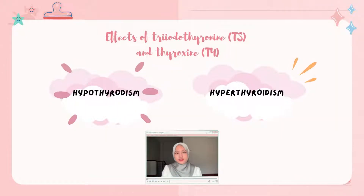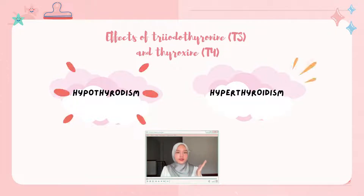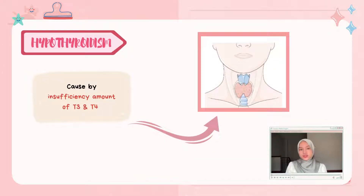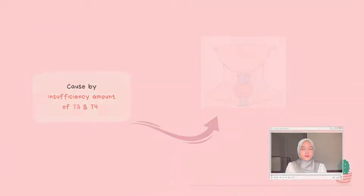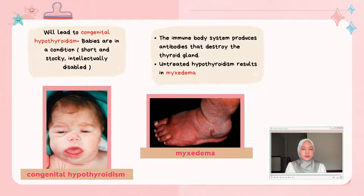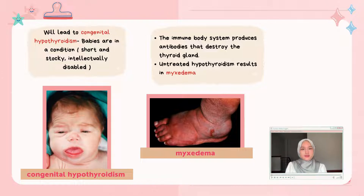The effects of T3 and T4 imbalance include hypothyroidism and hyperthyroidism. Hypothyroidism is caused by an insufficient amount of T3 and T4, which can lead to congenital hypothyroidism. Babies with this condition are short and stocky and intellectually disabled. The immune system may produce antibodies that destroy the thyroid gland, and untreated hypothyroidism can result in myxedema.